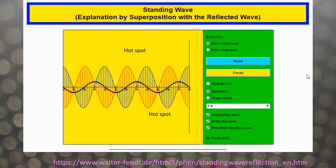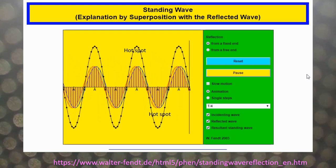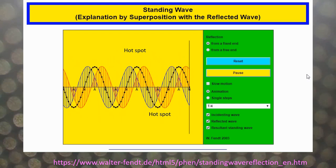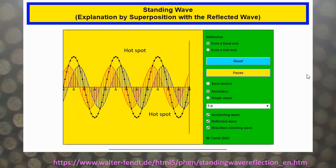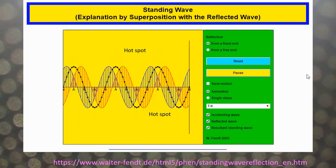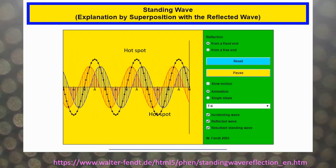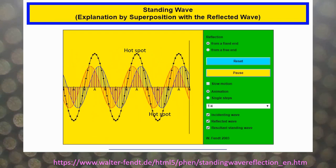So you get regions of hot spots and regions of cold spots. And in this experiment, we want to look at the hot spots. The distance between two hot spots is actually half a wavelength. So if you can identify the hot spots, you can measure the wavelength of the microwave, therefore measure the speed of light.